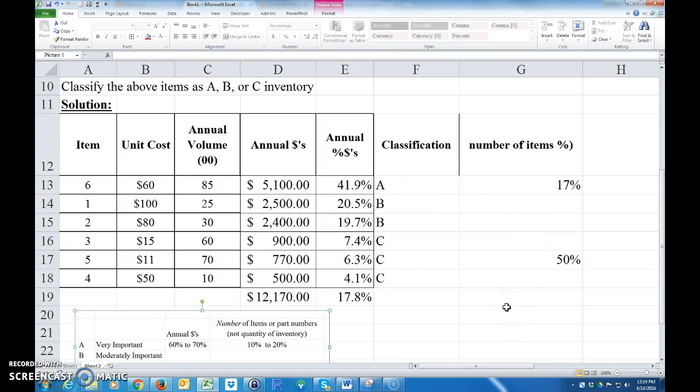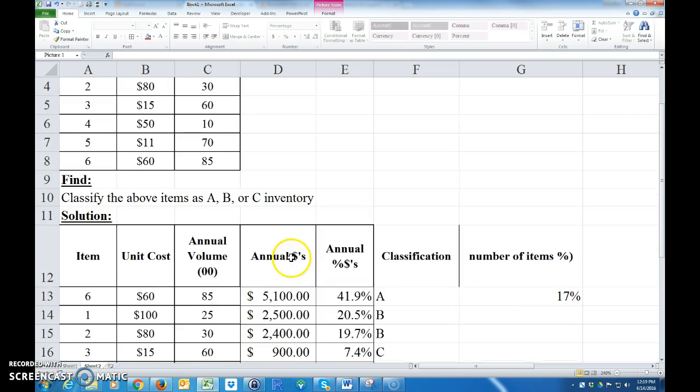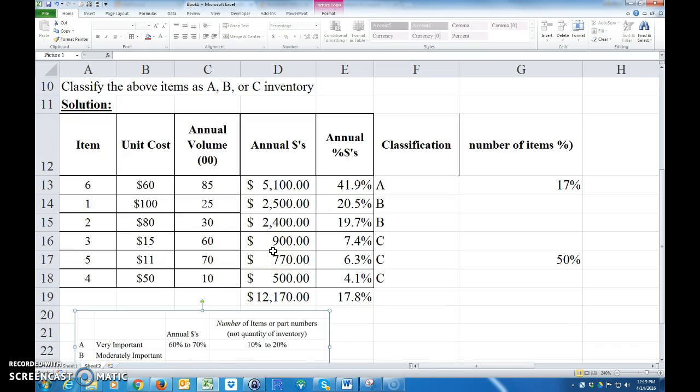Okay. So hopefully that makes sense. I know it's kind of a, you know, a lot of people like to be able to get an exact solution for some of these things. But when you're classifying A, B, or C, especially when you're using not very many items, it's hard to get within these ranges. These are like what's called a rule of thumb. Okay. So hopefully that helps. Thank you. Bye.